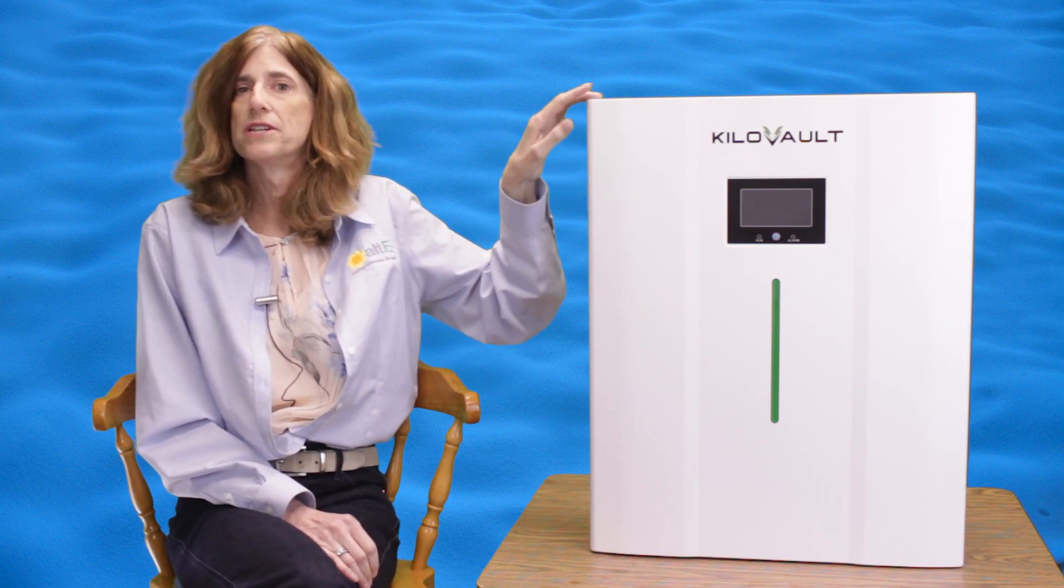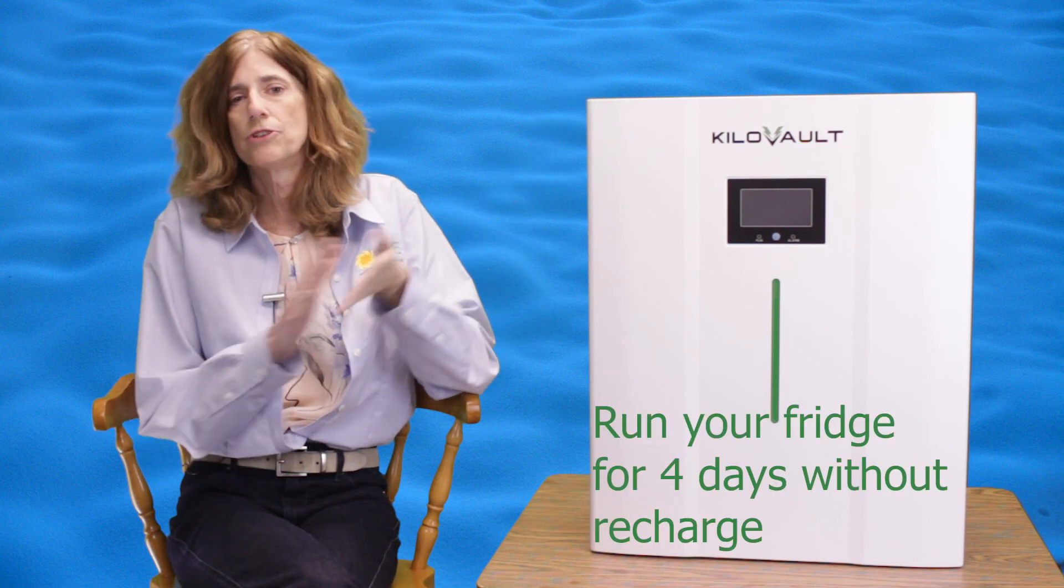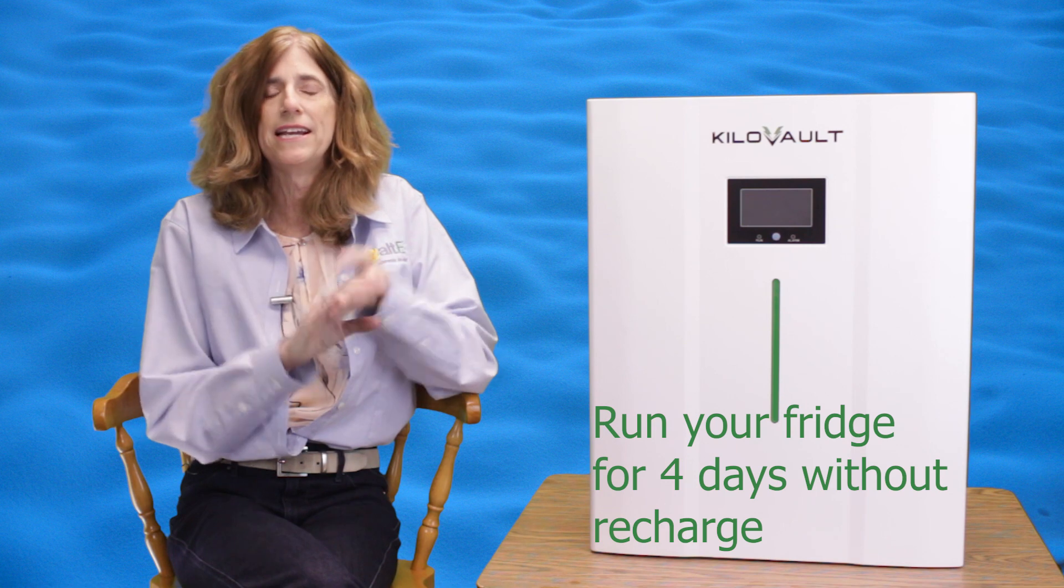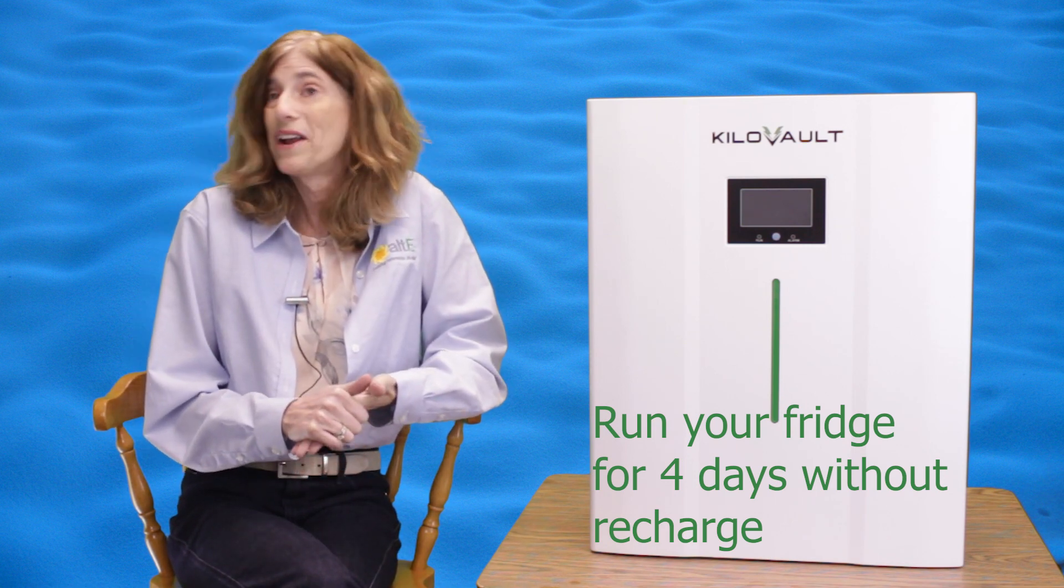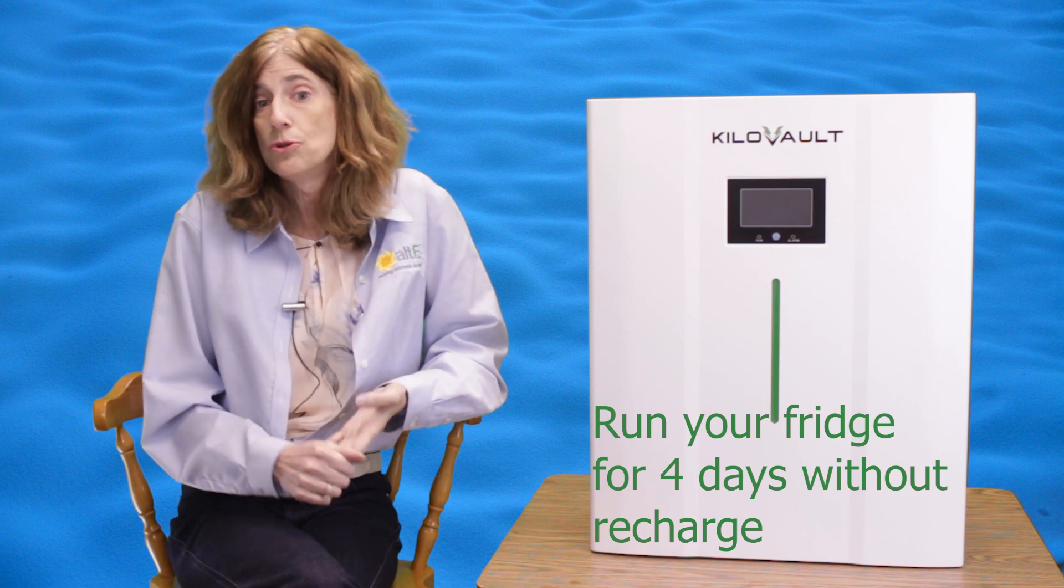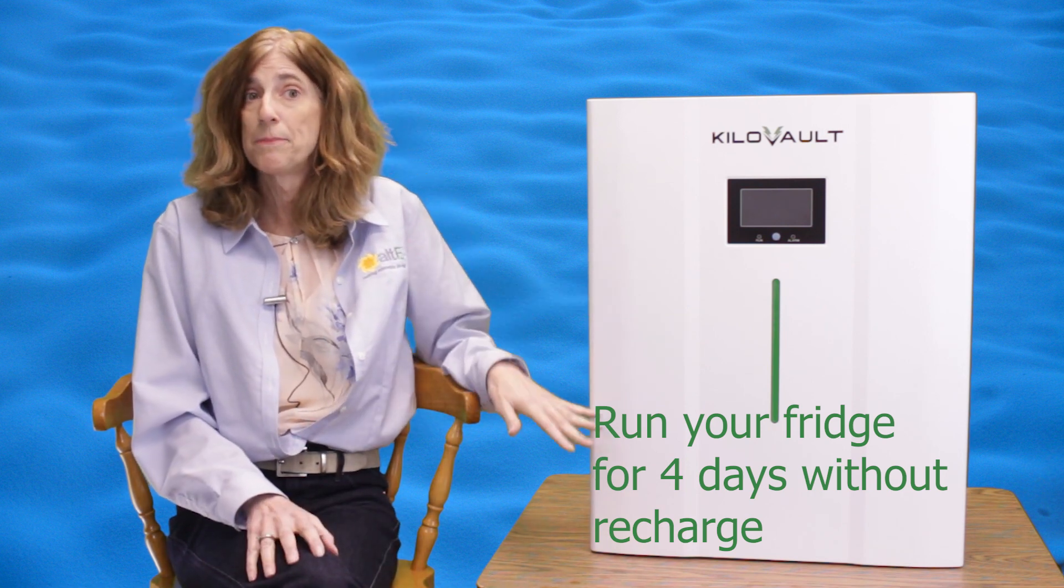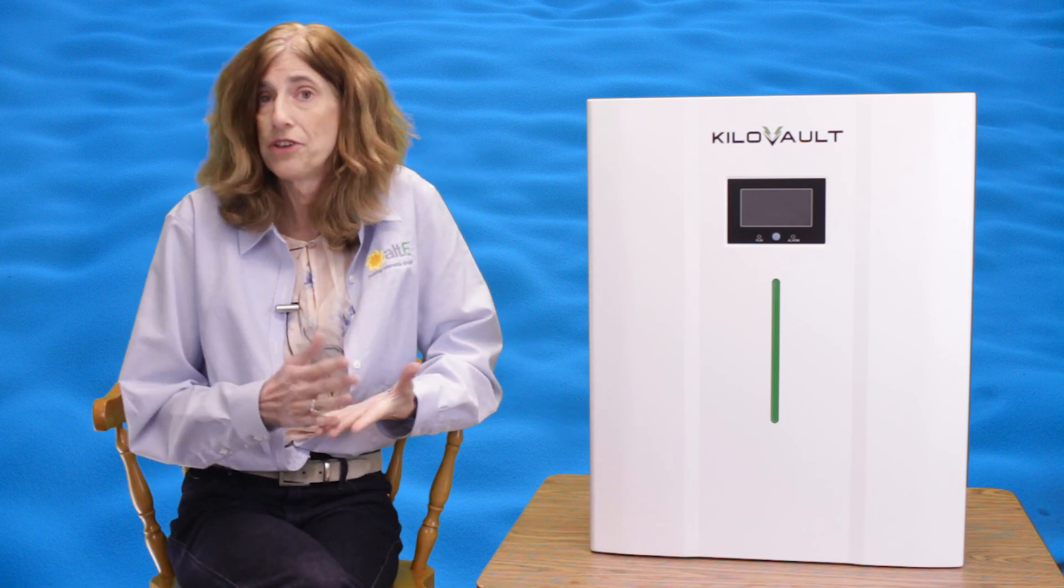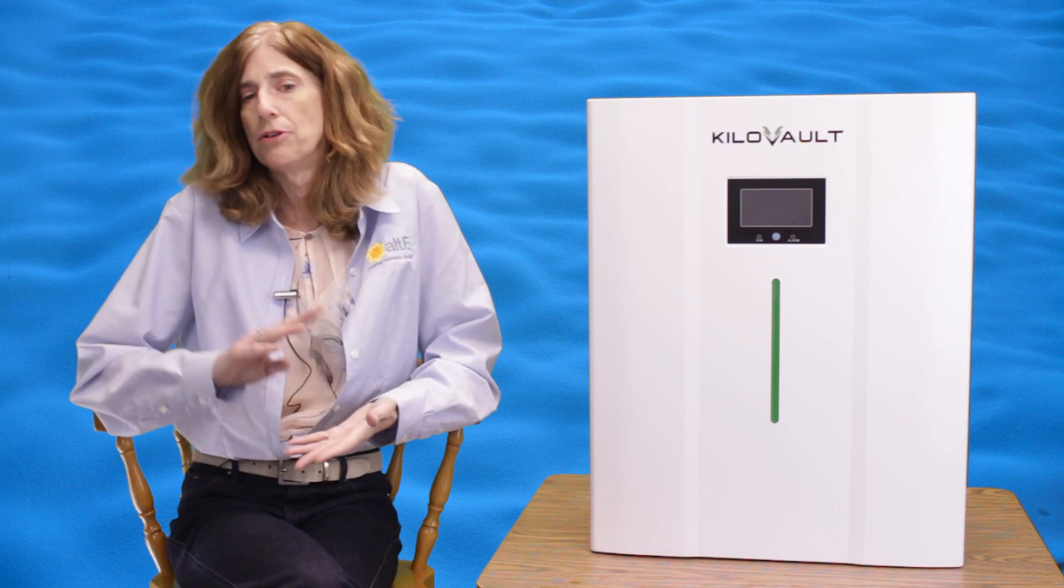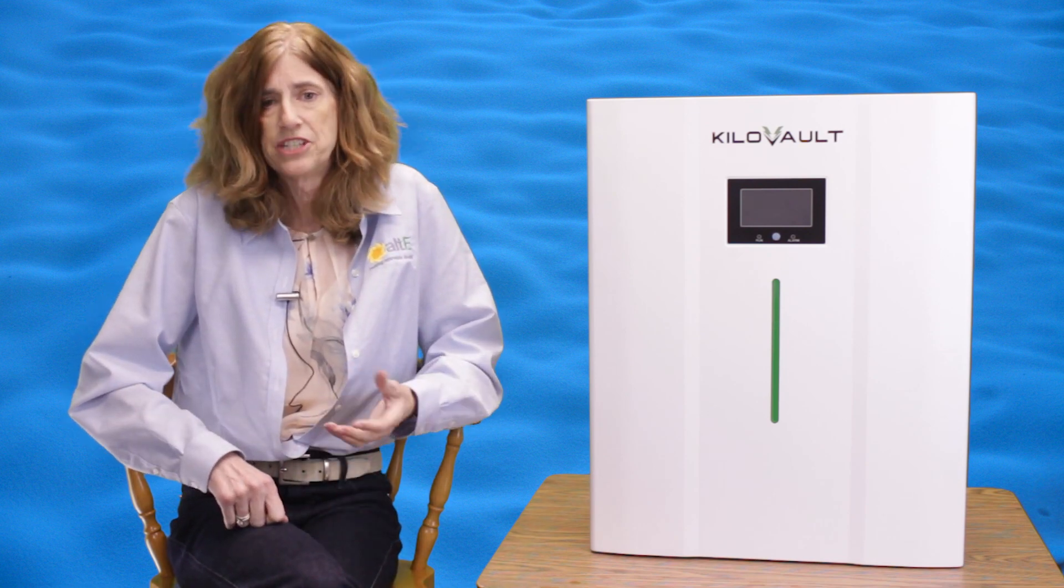So what can you do with the seven and a half kilowatt hour capacity? Say really your primary concern is keeping your fridge up and running. A typical fridge uses about one and a half kilowatt hours. So you can run that for four days and stay within 80% depth of discharge. Now if you're looking to support more of your house, do more of your house backup, you can run your fridge, your lights, your PC, keep your WiFi up, your TV.